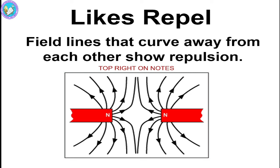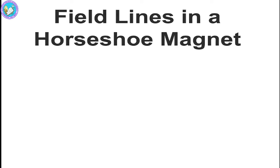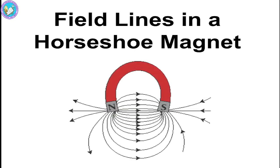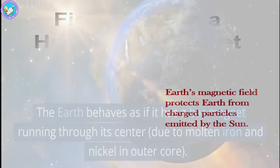Whereas in repulsion, the field lines curve away from each other, which shows the repulsion. If you see that the two same poles are together, you can see the repulsion of the lines where they cannot attract towards the poles of the magnet. The next one is the field lines in a horseshoe magnet, which is a very important example — it is in a shoe shape, where the north pole and south pole are present and show the attraction field.